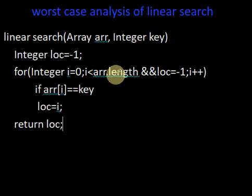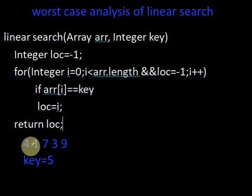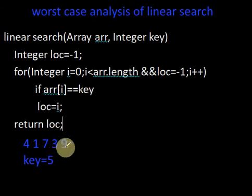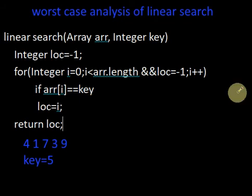What is the worst case? It is the scenario in which the algorithm shows its worst performance, or where the maximum number of operations are executed. When does the linear search worst case occur? If the element being searched is not present in the array, or if the element is present at the last position. Consider this case — if we are searching for element 5 which is not present in the array, or element 9 which is at the last position, we have to compare each element and go through the entire iteration of the for loop, executing the maximum number of operations.